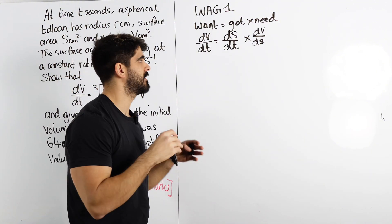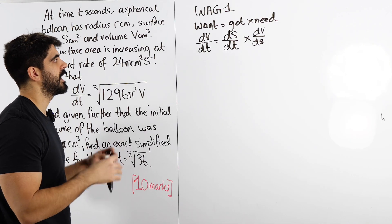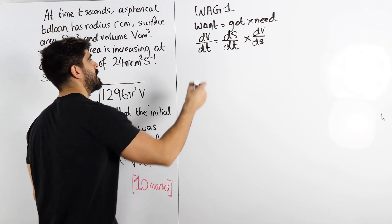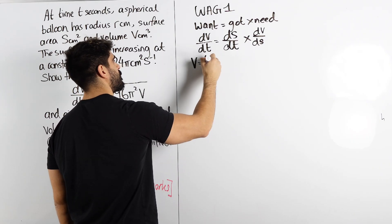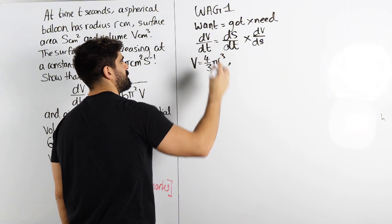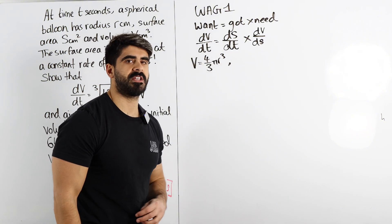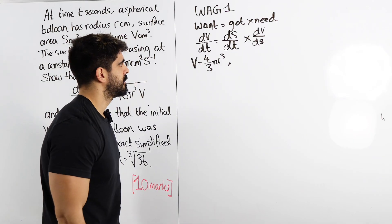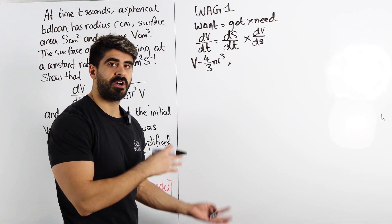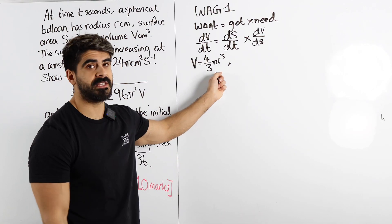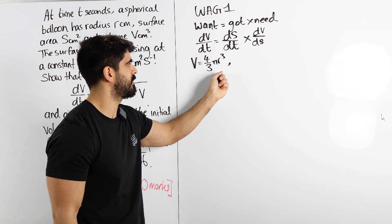Now, remember, ds by dt is 24π. We need to find dv by ds. So we somehow need to think about a sphere and find a relationship between the volume and the surface area. Well, I know that the volume of a sphere is 4 thirds π r cubed. Now, you might ask me, do we need to remember this for exam? I would say yes. Don't rely on the examiner giving this to you. A lot of the time they do, a lot of the time they don't. But if you remember this,